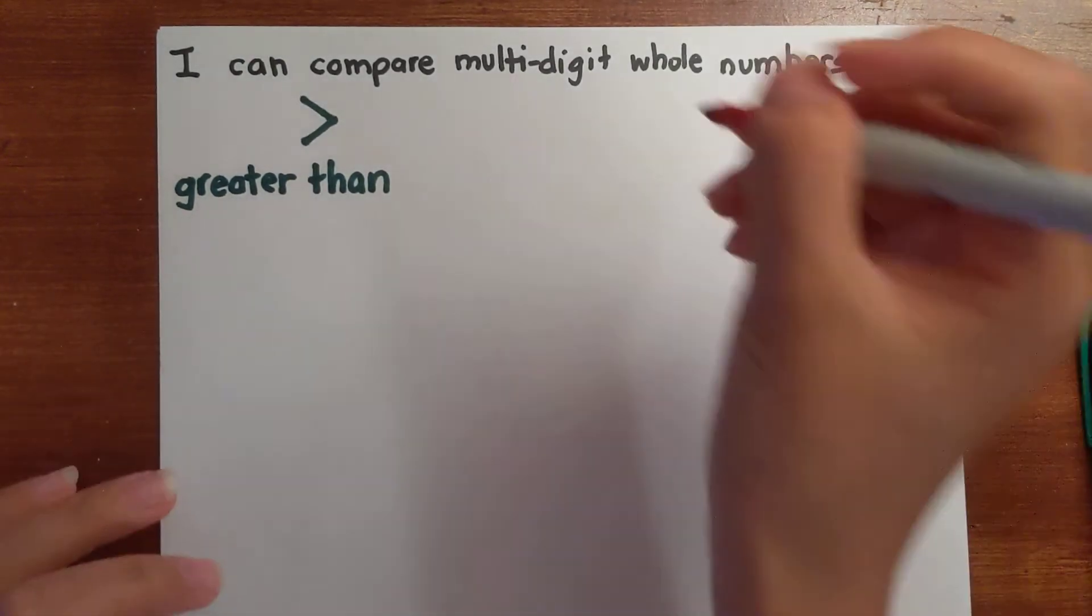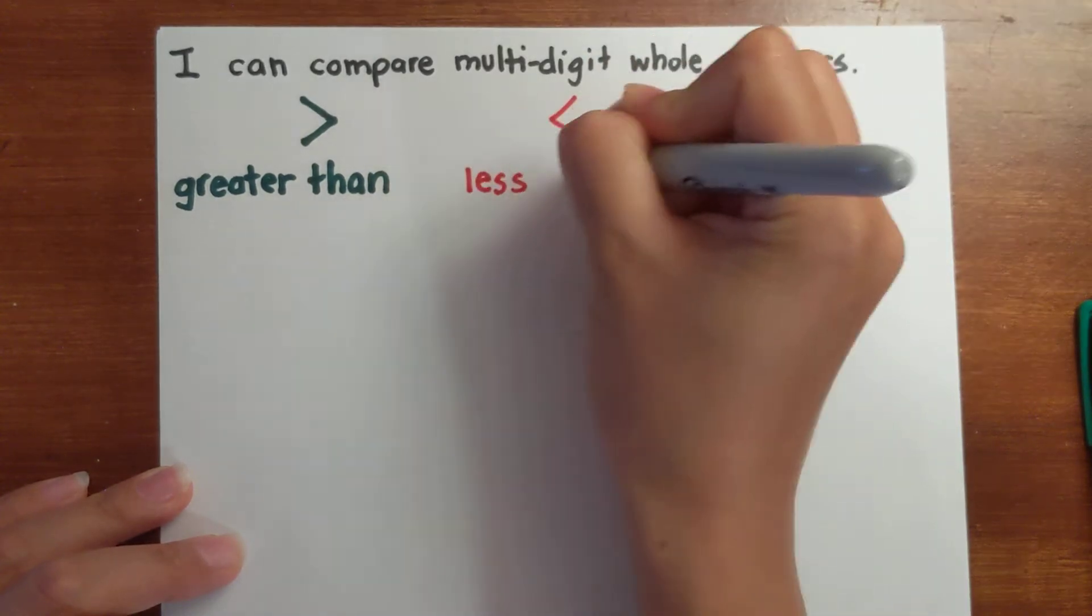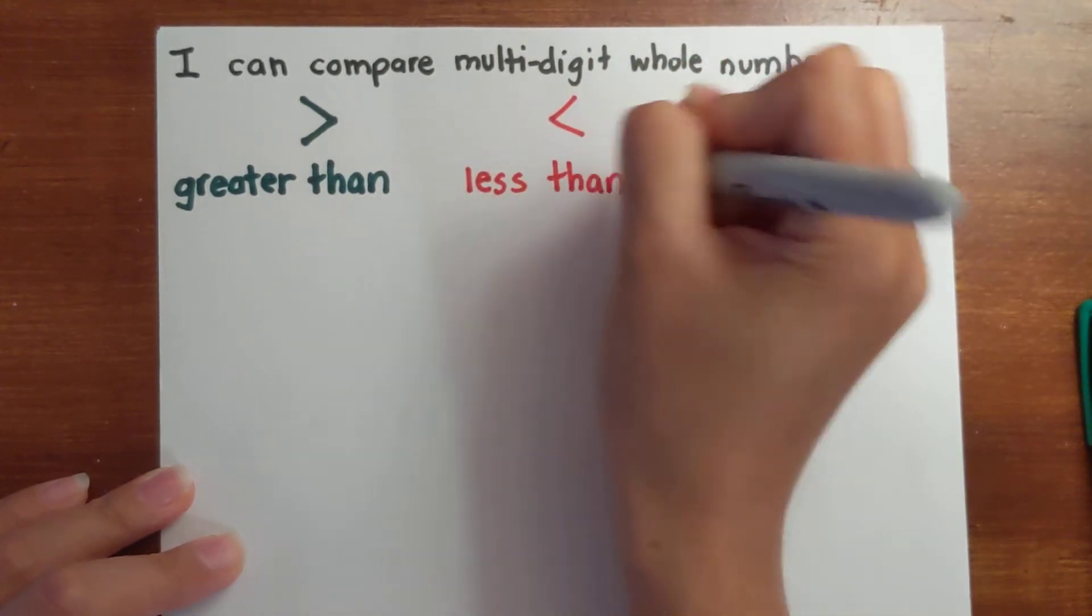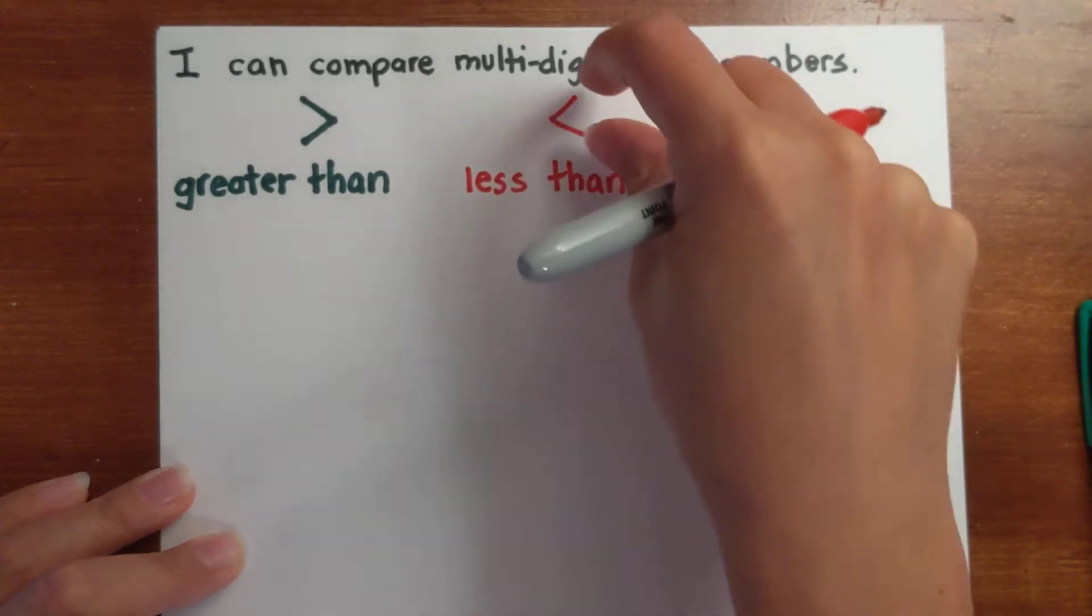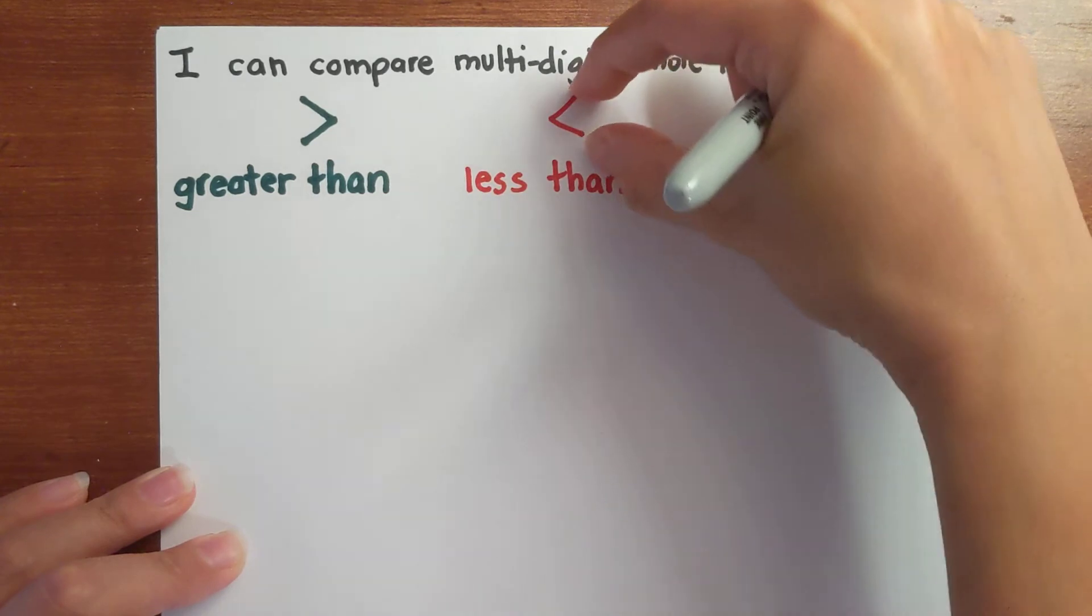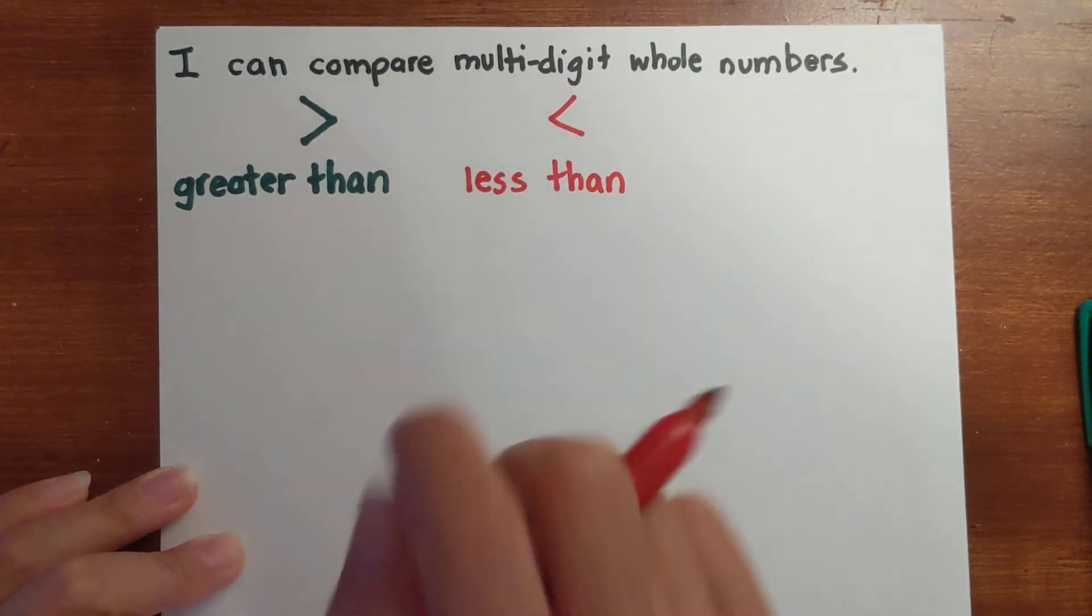Then I have the opposite, less than. Again, how I remember is you read from left to right. Look here, this is a closed-off point, right? It's smaller, it's less than the open portion. So it's less than, reading it from left to right.